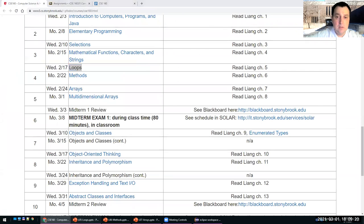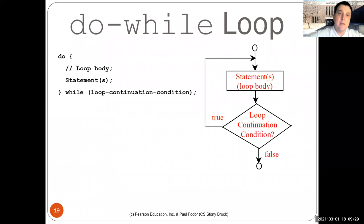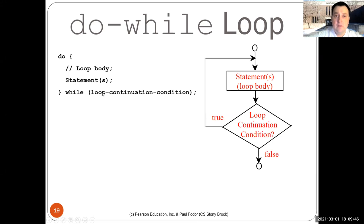So let's start with loops and continue the lecture from last time. Last time we talked about while loops — their syntax is very similar to the syntax of if statements. The only difference is that it's a loop and it executes while the condition is true. The moment that the condition becomes false, you exit the loop and continue with the rest of the statements after the loop. Do-while loops are a little bit different in that the continuation condition is tested after we execute the body of the loop, so the statements are executed at least once — no condition is tested before execution.